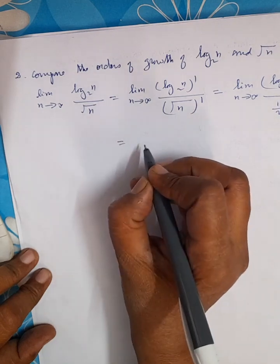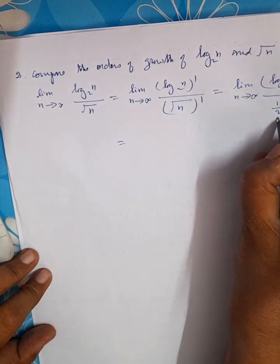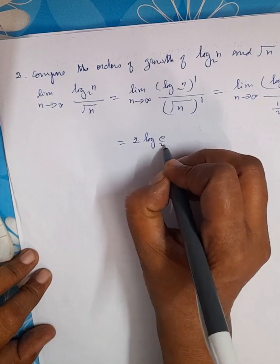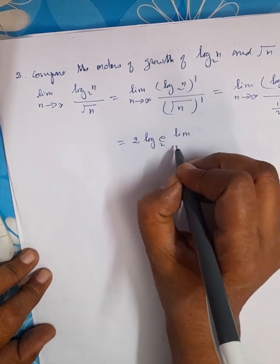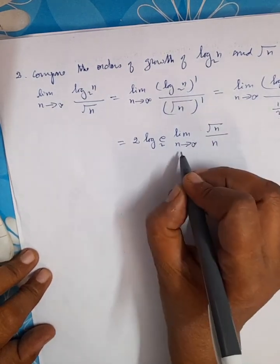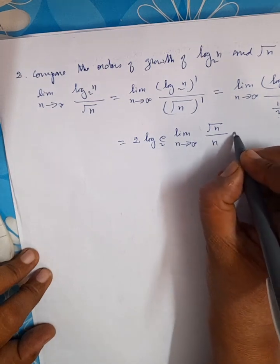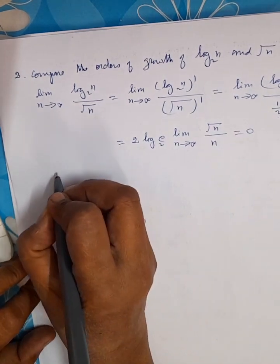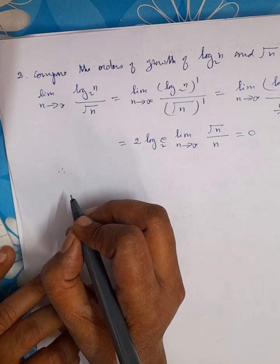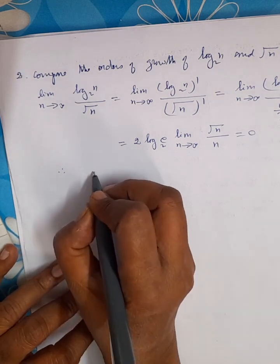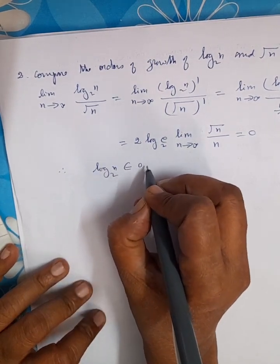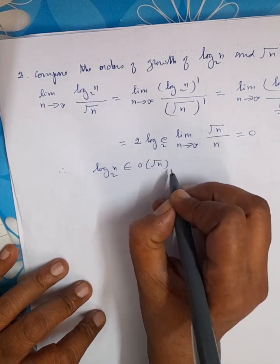The terms log_e(2) and 2 are constants, so we take 2·log_e(2) outside the limit, leaving limit n tends to infinity of √n/n. Applying the limit gives 0. Therefore log₂n has a smaller order of growth than √n, and we can use little-o notation: log₂n is in o(√n).